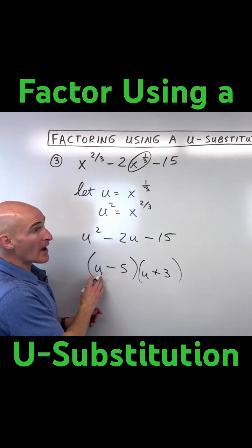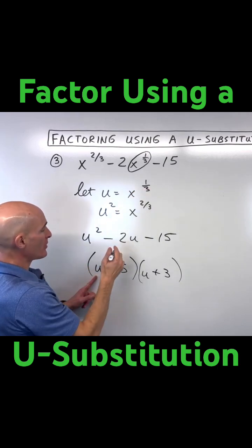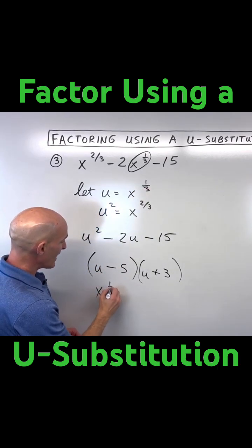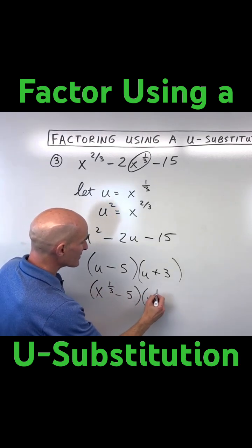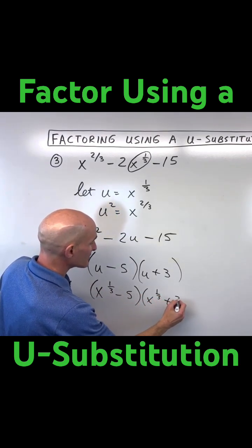Now we want to go back to our original variable. So since u is equal to x to the 1/3, let's go ahead and replace that. So x to the 1/3 minus 5, x to the 1/3 plus 3.